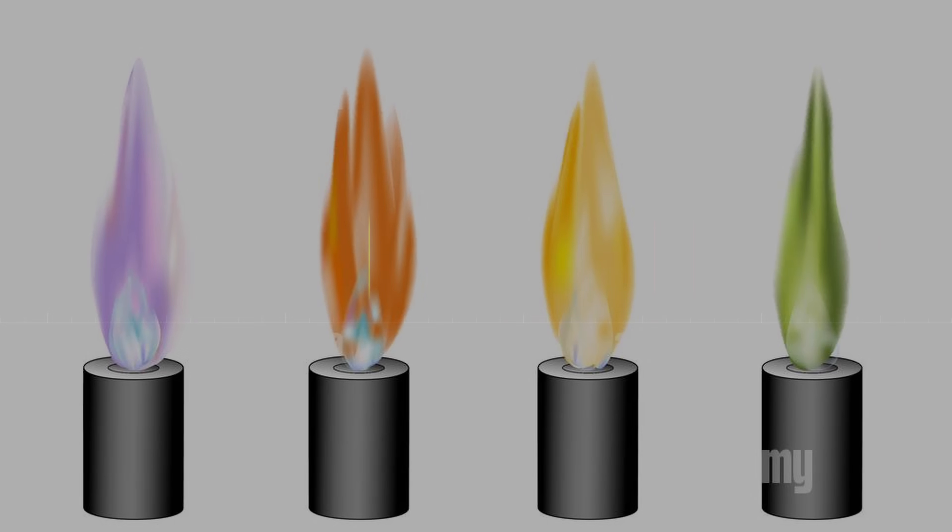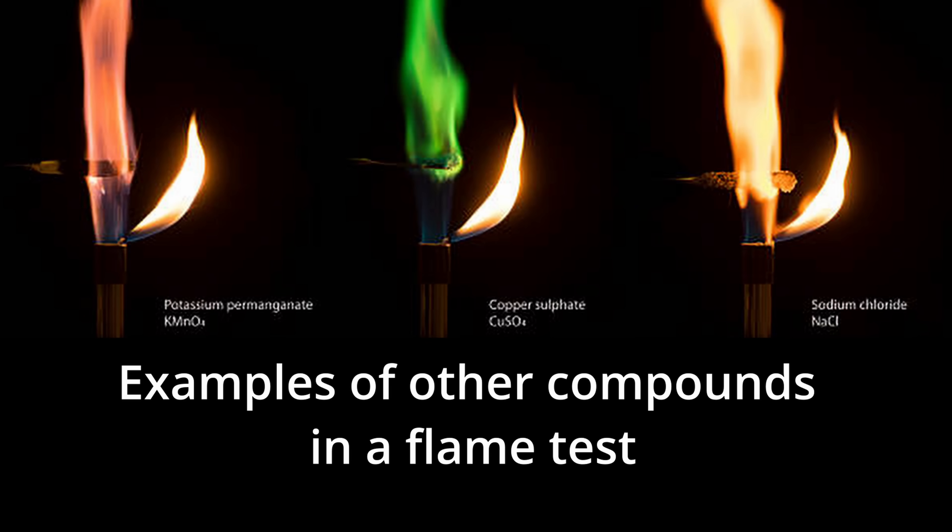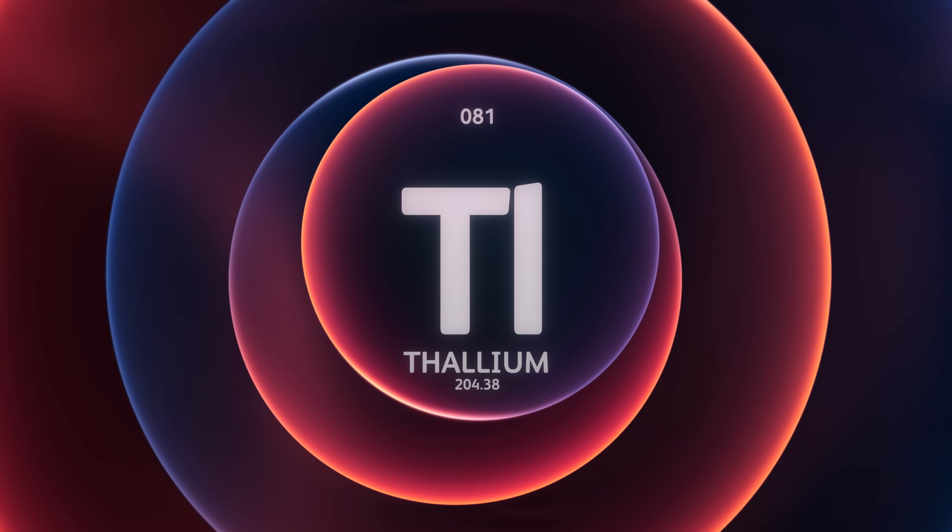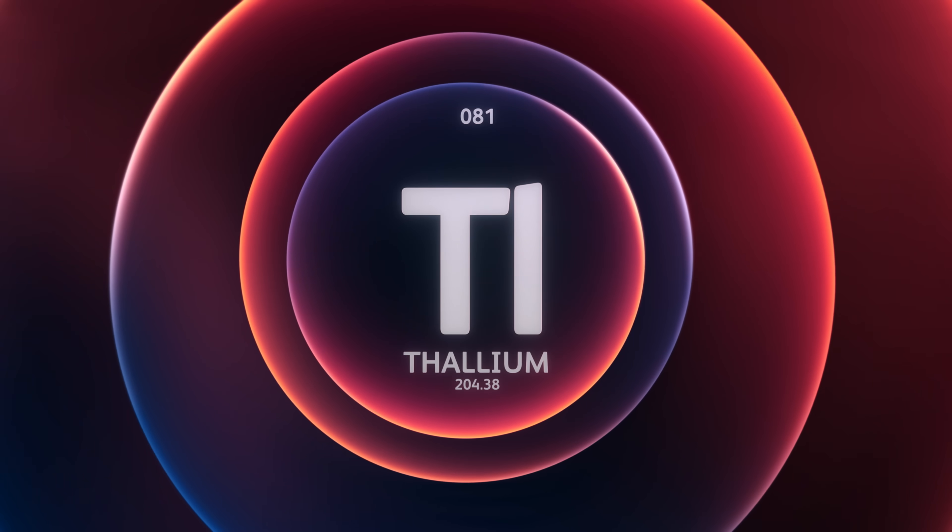This was a color no one had ever seen before in any known element's flame. It was as if a tiny green twig had flashed before his eyes. Inspired by that vivid color, Crookes chose the name thallium, from the Greek thallos, meaning green shoot or green twig. A pretty poetic name for a metal, right?